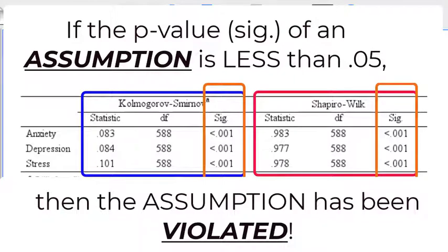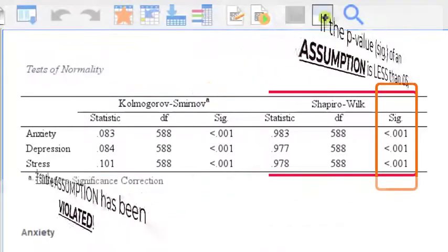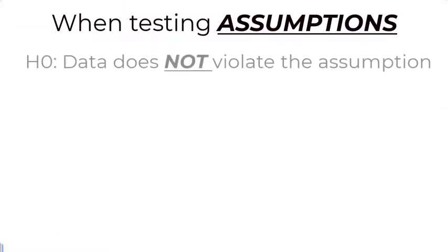I'll say that again. Students get confused on this a lot. So think about the null hypothesis when checking assumptions. The word no or not is in the null hypothesis. So the null hypothesis would be these variables did not violate the assumption of normality. That's the null. They did not violate.